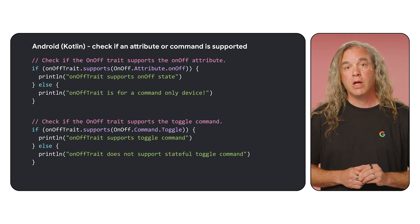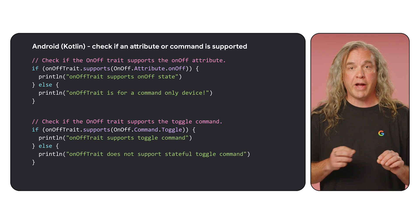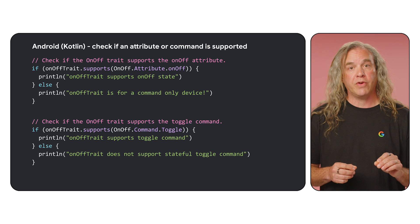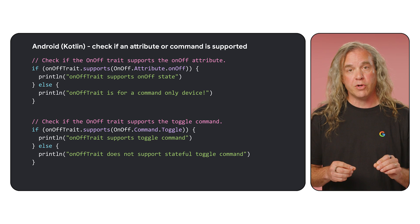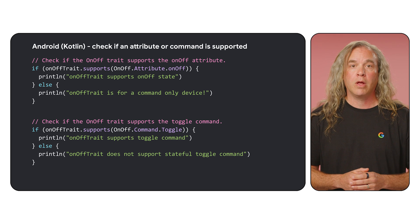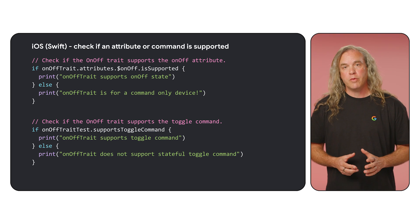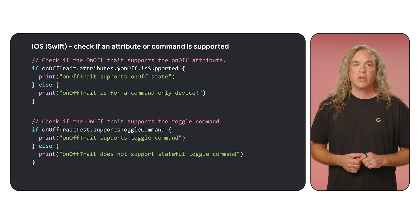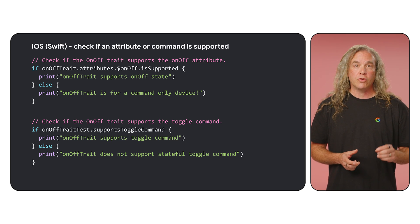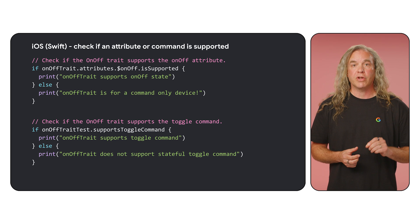For Android, there are two different supports functions — one each for attributes and commands. You specify the attribute or command as a parameter and the function returns true or false if it's supported. For iOS, each individual command has its own supports function, so check the reference documentation for the specific call you need. For attributes, use the is-supported method in each trait's property wrapper. Once you know what is available for a device, you can tailor the logic of your app accordingly and gracefully handle situations when some devices have different capabilities compared to others of the same type.